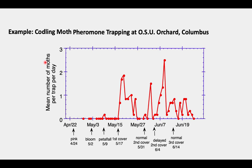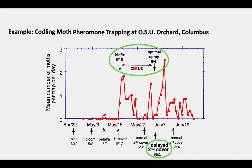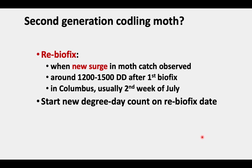Here's an example shown in graph form. This graph shows the mean number of codling moths per trap per day. You can see we had our first moth right around petal fall, but we didn't call that biofix. Then we had sustained flight and we called biofix, and then we started counting degree days. In this case, we were using Imidan and were looking for 250 degree days. That ended up happening on the 4th of June — a later than usual year. So we called for delaying our second cover spray until the 4th of June.